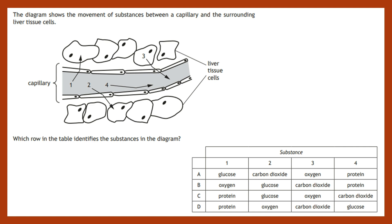Number one is a substance leaving the capillary and entering into the tissue cell right at the entry point — that must be oxygen. Number two is also in the capillary and ultimately entering the tissue cells, so looking at the table it must be something useful to us — that's glucose. Number three is something in the liver cell making its way to the blood within the capillary, so something the cell wants to get rid of — that must be carbon dioxide. And number four is a substance that remains within the capillary at all times — that must be the plasma protein.